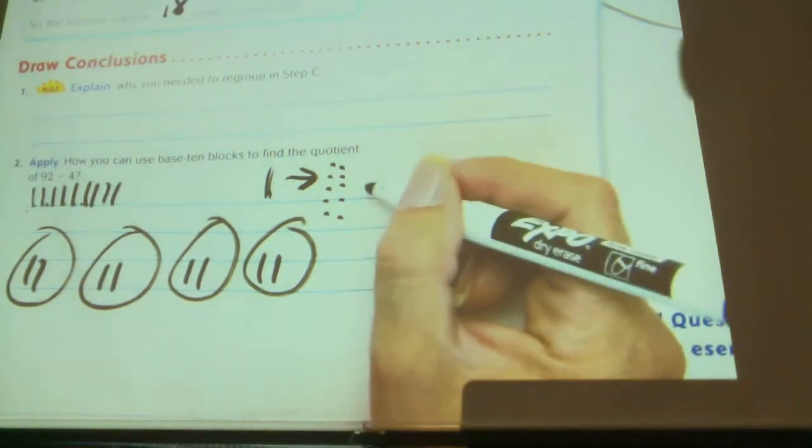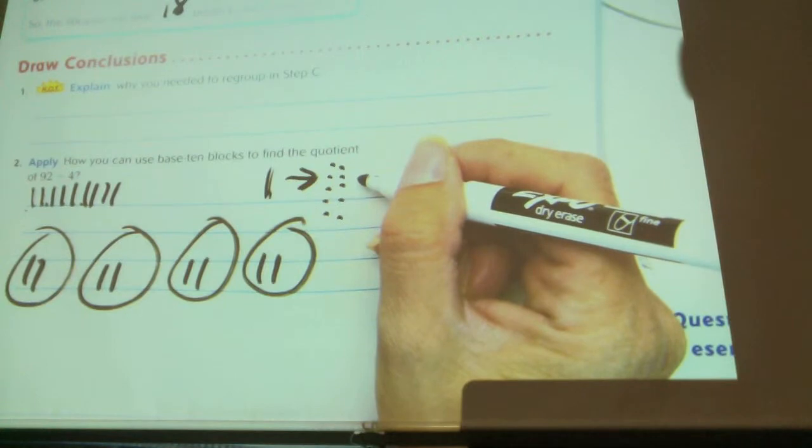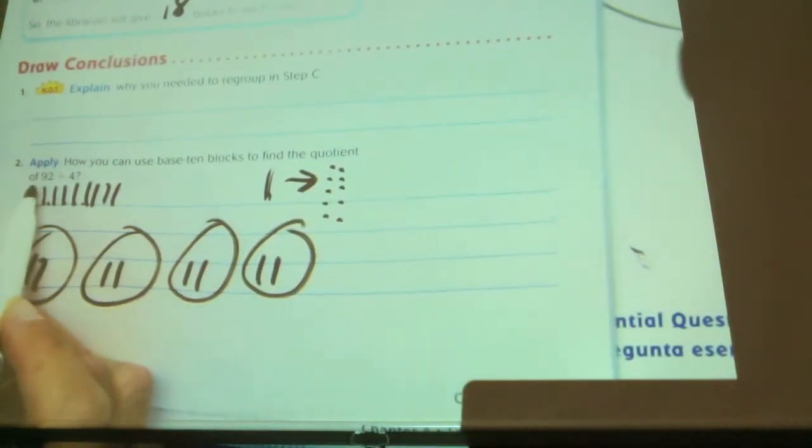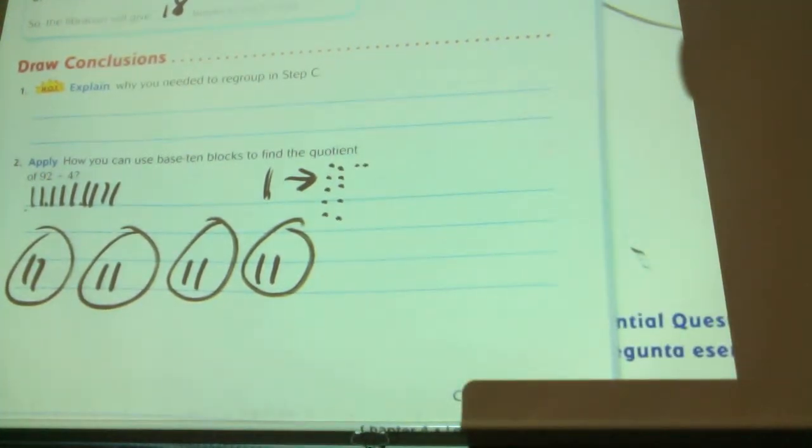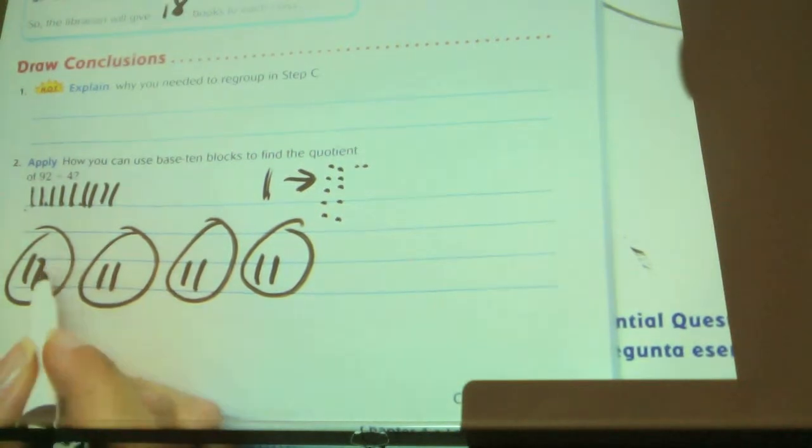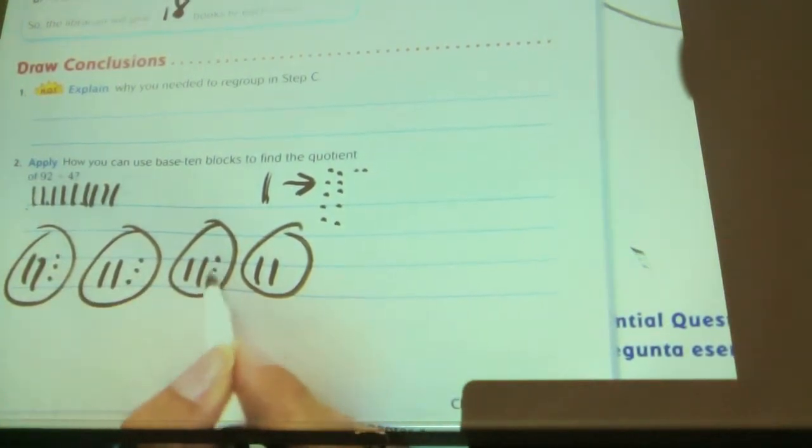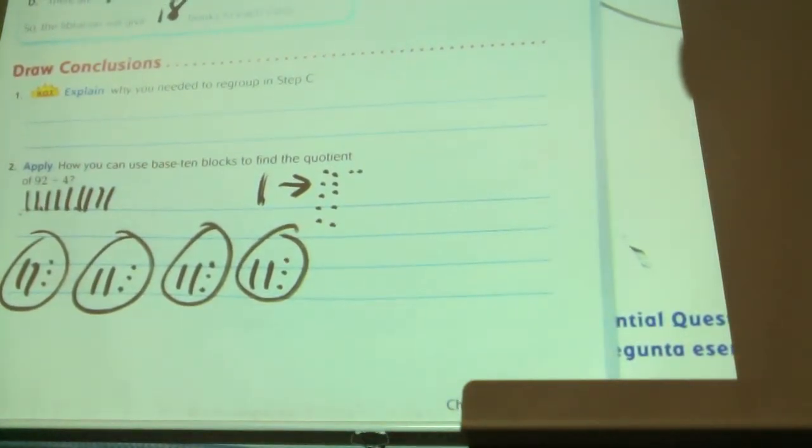Okay? How many ones did I already have before I did the regrouping? Two. Because I had nine tens and I had two ones. So now how many ones do I have? Twelve. Can I put the ones equally into four groups? Yeah. Twelve ones. How many are going to end up in each thing? Three. So if I was doing this on my mat, this is what it would end up looking like.